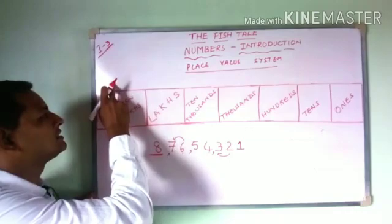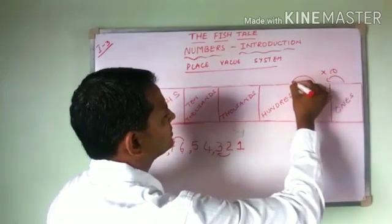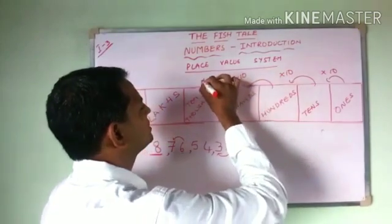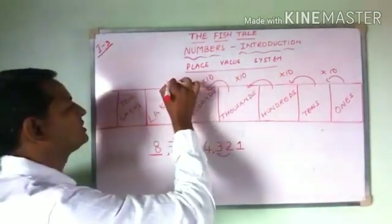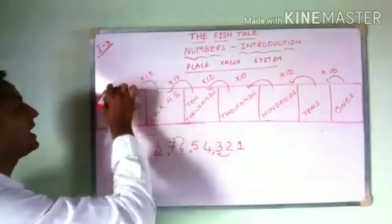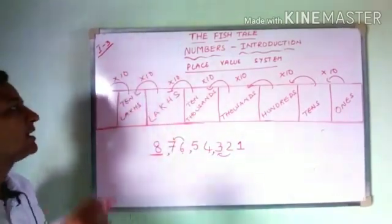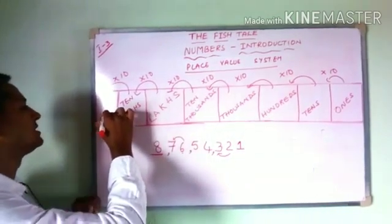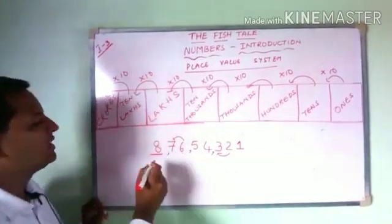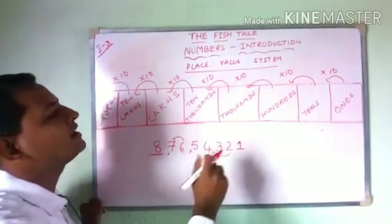10 lakhs will be increased 10 more times. From 1s to 10s it increases 10 times, from 10s to 100s another 10 times, from 100s to 1000s another 10 times, 1000 to 10,000 another 10 times, 10,000 to lakhs another 10 times, lakhs to 10 lakhs another 10 times, and from 10 lakhs to the next place to the right also increases 10 times — and that place value is called crores. We read this number as 8 crores 76 lakhs 54,321.